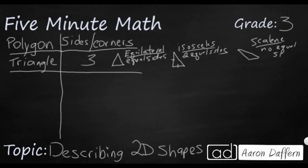I could also describe triangles by their angles instead of their side lengths. If all three of the angles in the triangle are acute — meaning they are smaller than 90 degrees — then it's an acute triangle. So this equilateral triangle is always going to be an acute triangle, because if all three sides are equal, then all three angles are going to be smaller than 90 degrees, smaller than a square corner.